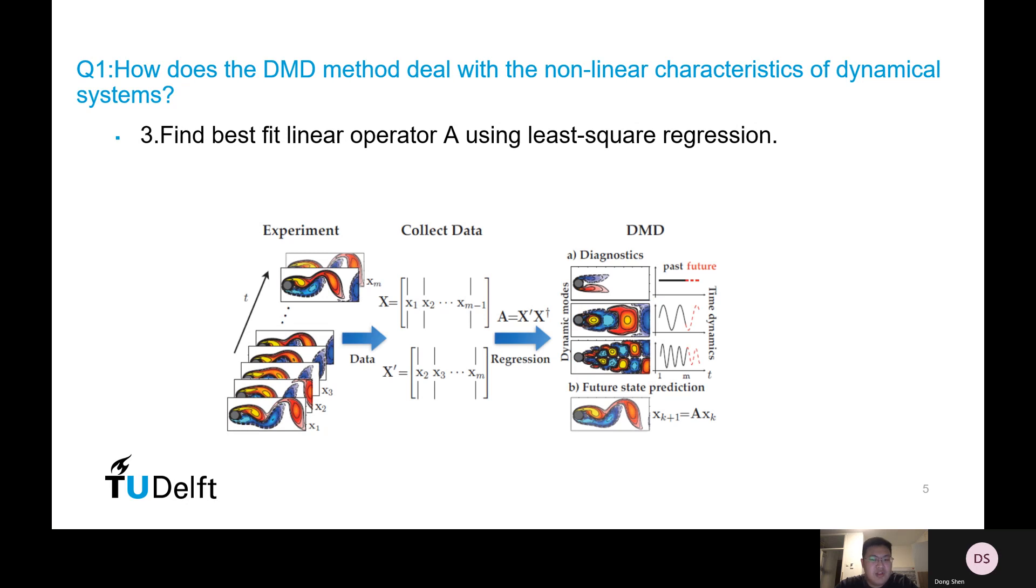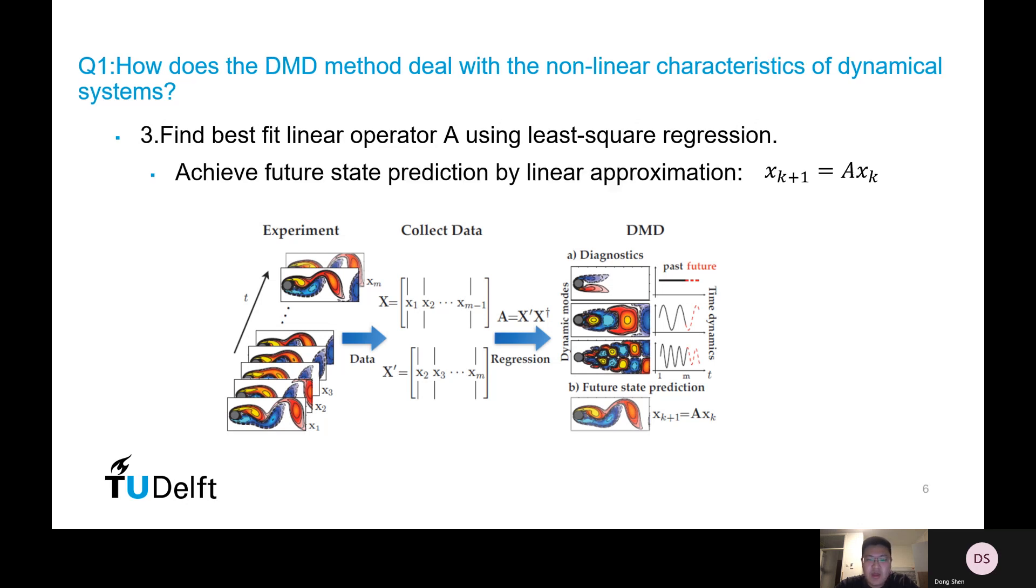After that, we will use least-square regression to find the best fit operator A through A equals X' times X cross. Here, X' is the output matrix we just mentioned, and X cross represents the Moore-Penrose pseudoinverse of our data matrix. Then we can use this A as a linear approximation to predict future states. So it sounds very simple, right? Just collect some data and calculate an inverse, then you get it.